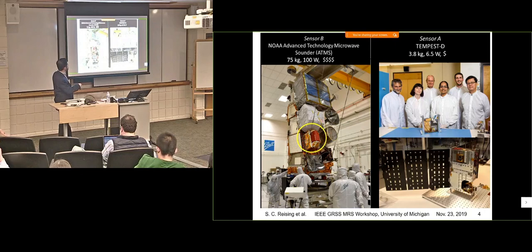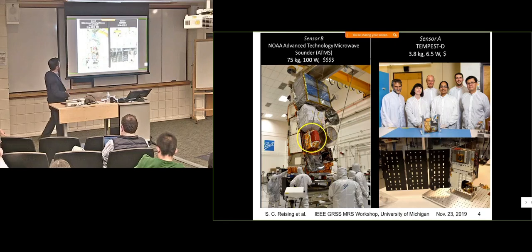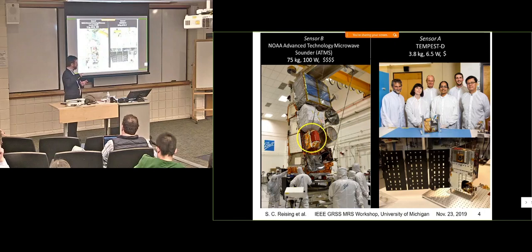So it's 75 kilograms in mass, 100 watts in power consumption, and $4 signs on Yelp. TEMPEST-D is much cheaper. I don't have a one-for-one comparison, but it is about five times smaller in mass and power consumption at 3.8 kilograms and 6.5 watts. And here it is on the table. That's a 4U. So 1U is a 10-centimeter cube, classically with mass at 1.3 kilograms.